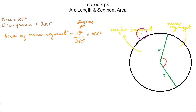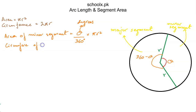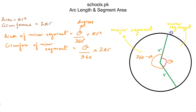To find the area of the major segment, we use the same formula but replace θ with (360° − θ), since that is the angle making up the major segment. To find the arc length of the minor segment, we use: (θ/360) × 2πr. This gives the arc length — that portion of the circumference of the entire circle corresponding to the minor segment.